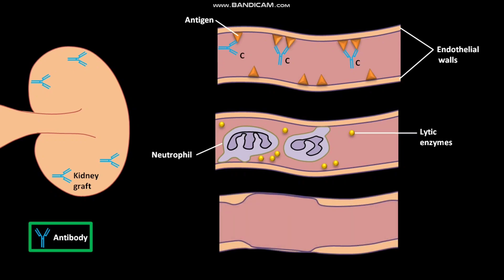Lytic enzymes destroy endothelial cells. Platelets then adhere to the injured tissue, causing vascular blockage of the kidney graft. As a result, the kidney graft is rejected.